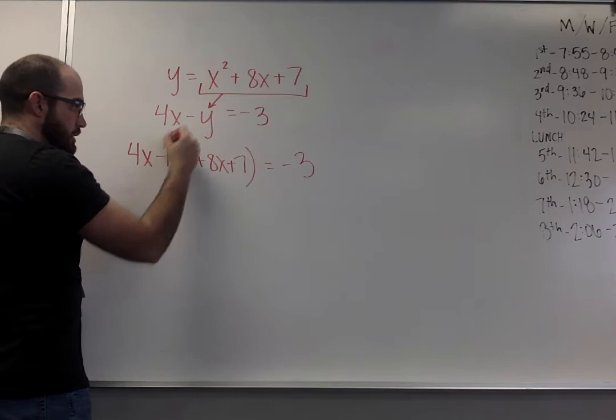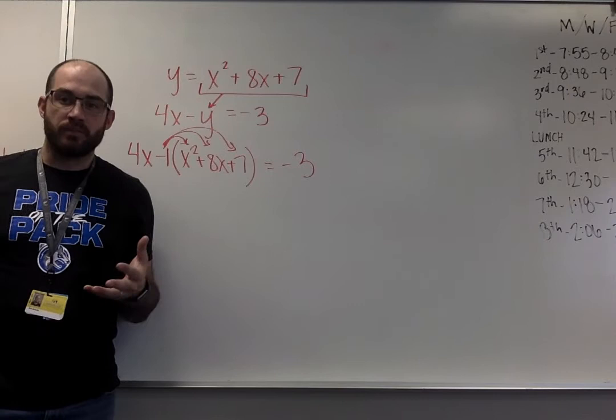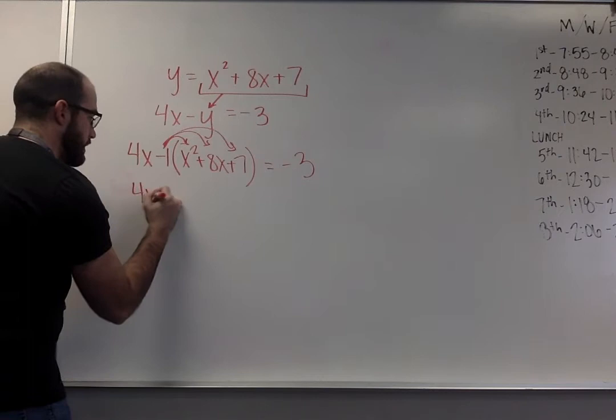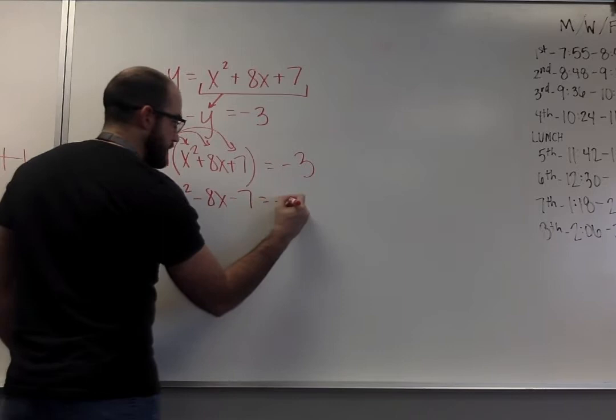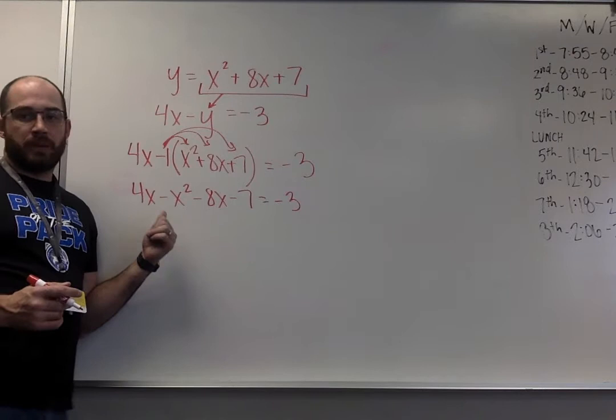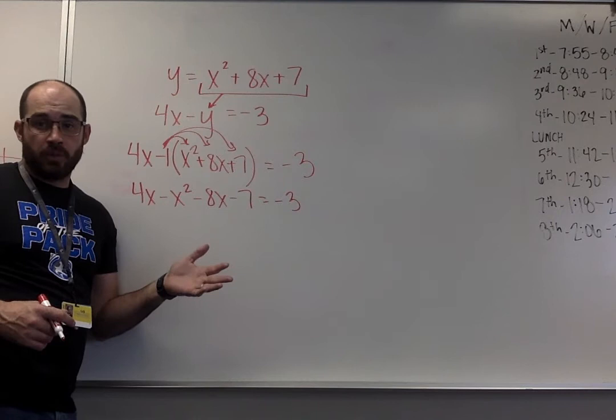Because there's a minus in front of that y, I'm going to distribute essentially a negative 1 into my parentheses. If this was a positive, like a plus there, I wouldn't have to change anything. I can leave it all positive. Here, I'm going to simplify this out. I would have 4x minus x squared minus 8x minus 7 equals negative 3. We want our a value to be positive if we can. So I'm going to move everything over to the right side of the equation and set it equal to zero that way.